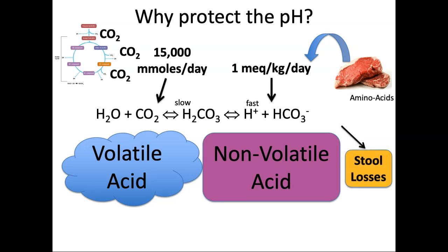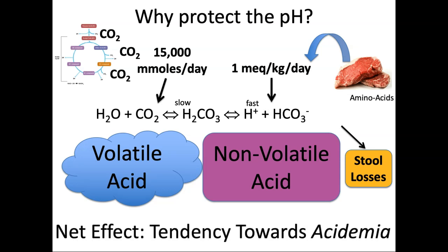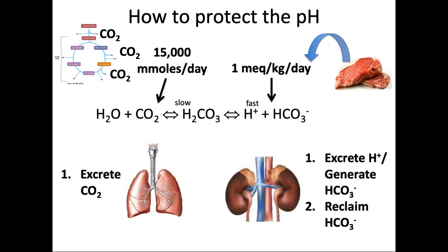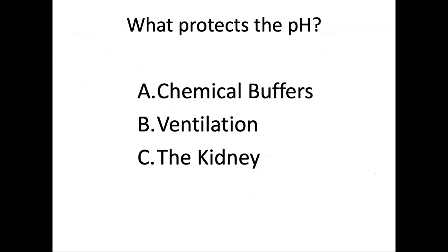We also lose a little bit of bicarbonate in our stool because secretions in the colon and gastrointestinal tract are very high in bicarbonate. So the net effect is that every day we trend towards acidemia — we're generating acid and losing a little bicarbonate in the stool. Clinically, we always tip towards acidemia. To protect the pH: for the volatile acid, we need good lungs and ventilatory system to excrete the CO2. For the fixed acid, we have to excrete those protons, regenerate the bicarbonate that buffered them, and reabsorb any filtered bicarbonate so we don't lose it in the urine.